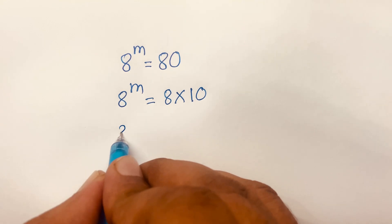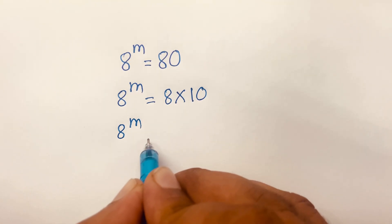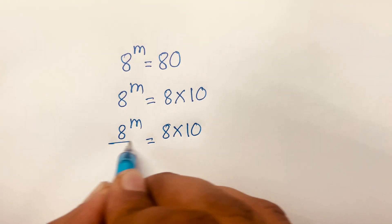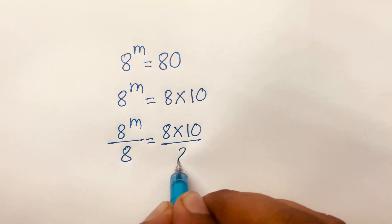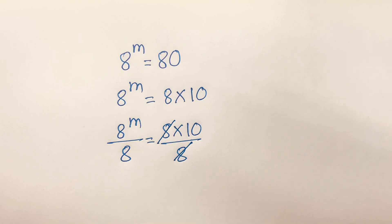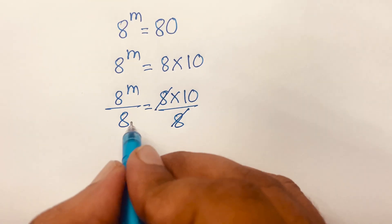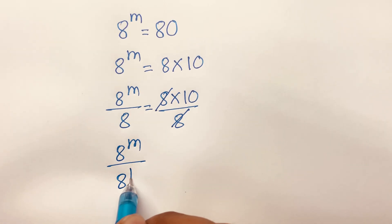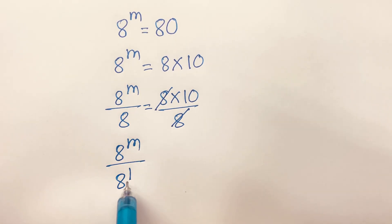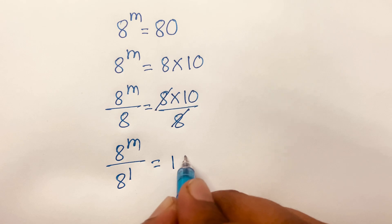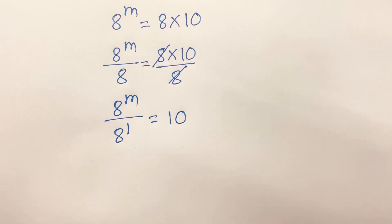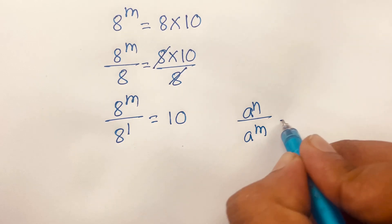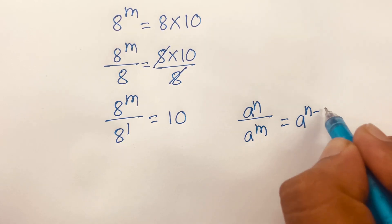So 8 power m is equal to 8 times 10. Dividing both sides by 8, this cancels, and we find 8 power m over 8 power 1 — where this exponent is 1 — is equal to 10. We know that a to the power n over a to the power m is equal to a to the power n minus m.